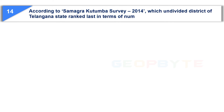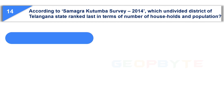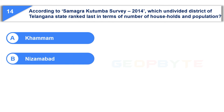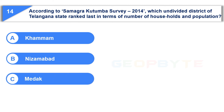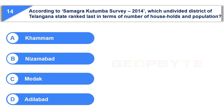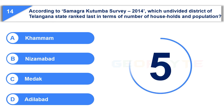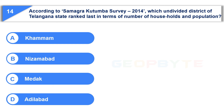The fourteenth question is: According to Samagra Kutumba Survey 2014, which undivided district of Telangana State ranked last in terms of number of households and population? Option A: Khammam. Option B: Nizamabad. Option C: Medak. Option D: Adilabad. And the correct answer is Option B: Nizamabad.